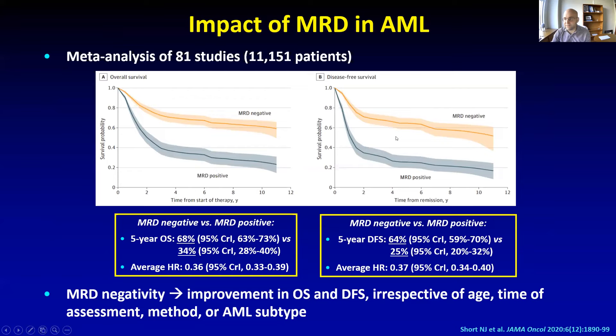I don't want to show a lot of survival curves, but the point of this large meta-analysis is that it takes a large number of studies looking at the impact of MRD and combines all the data together to give a big-picture view. The main point is to show that patients on average who are MRD negative do better than those who are MRD positive. So our goal is to eradicate MRD in patients with AML.